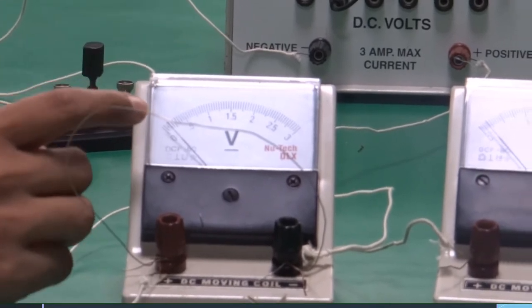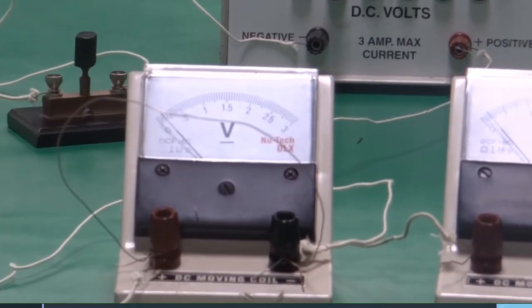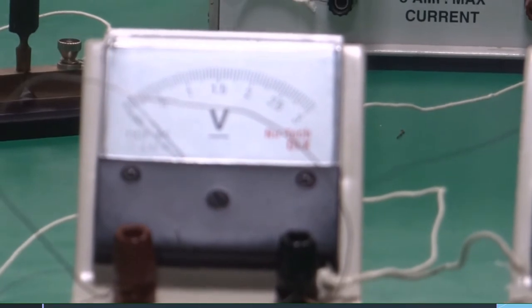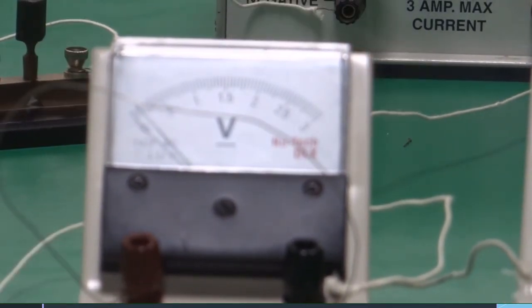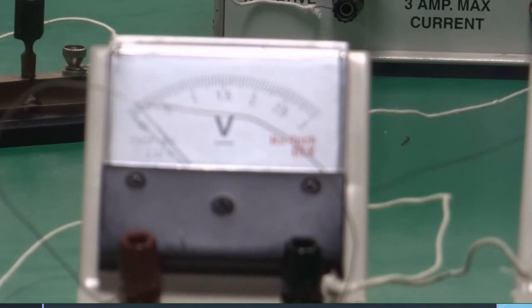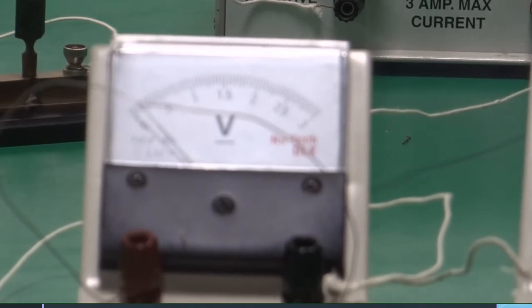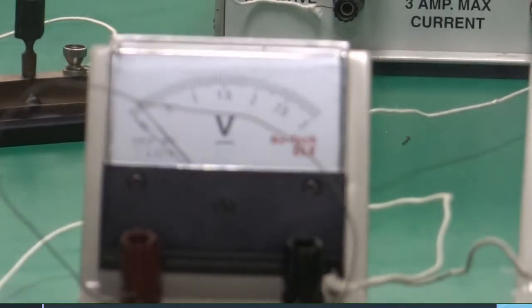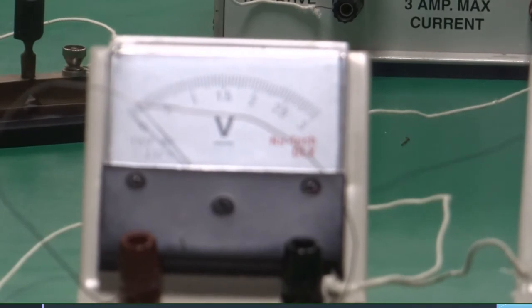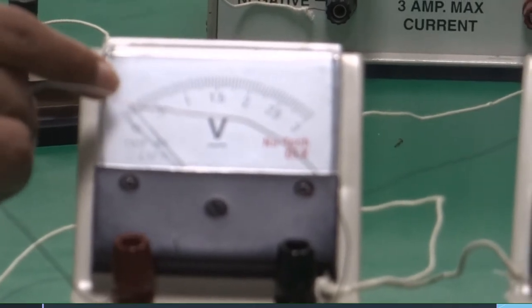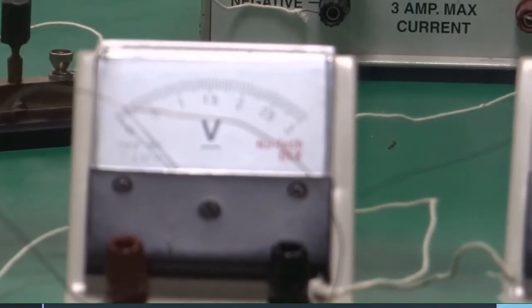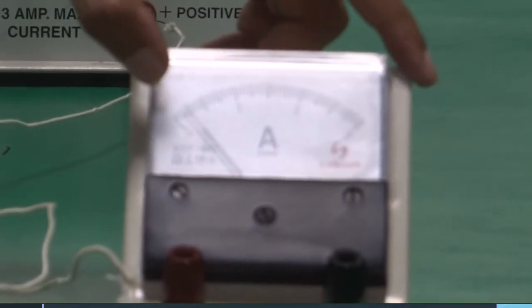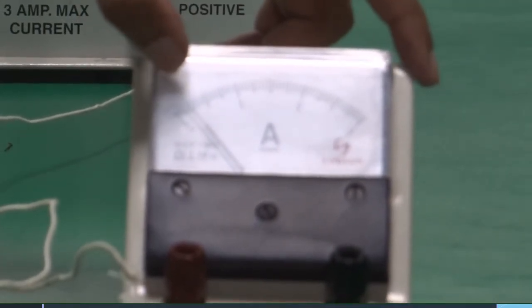When you are taking the readings you should see it from exactly above the line. This is because it will reduce any parallax error. Because if I see the reading from here I am seeing it as 0.5, if I see from here I will see it as 0. So you should see straight above. Now these are two divisions, it means it is 0.1 volt. And over here you can see that the current is five divisions, that is 0.25 amperes.